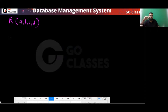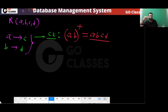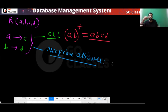Our relation has attributes ABCD. First, find the candidate keys. Which attributes are not on the RHS of any FD? A and B. So A, B must be part of every candidate key. AB can determine A, B trivially, and since A determines C and B determines D, AB is the only candidate key. The non-prime attributes are therefore C and D.